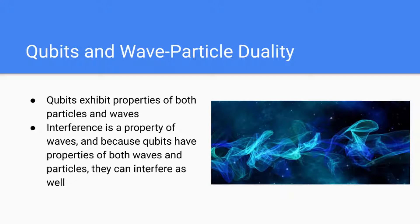So first, we need to talk about qubits and how they embody wave-particle duality. In essence, qubits exhibit properties of both particles and waves, similar to electrons. Interference is a property of a wave, and because qubits can have properties of both waves and particles, they interfere with each other as well. And this phenomenon allows us to calculate problems a lot faster on quantum computers.